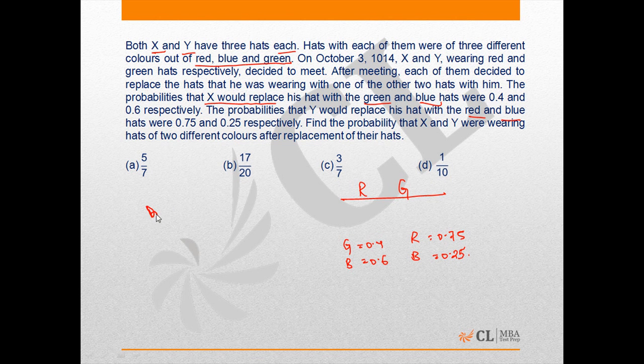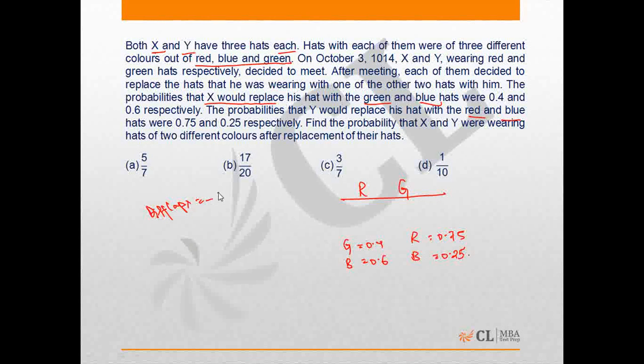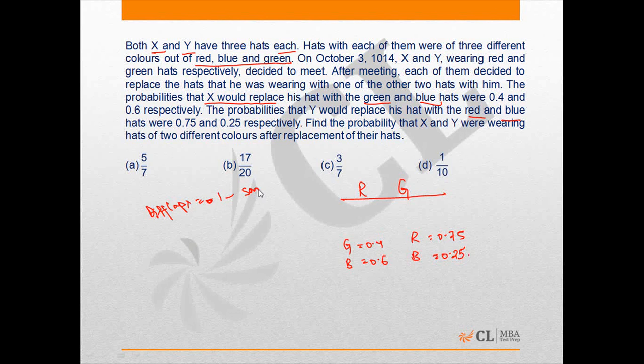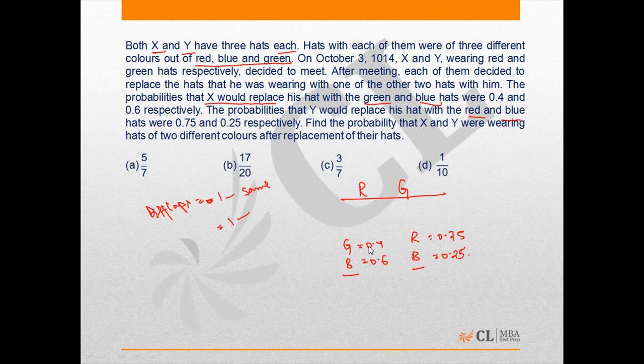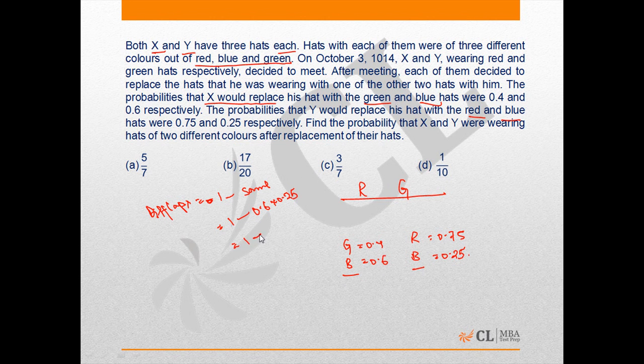Now the probability of different caps can be written as 1 minus probability of same caps. So if it is same it can only be blue and blue. So it is 1 minus 0.6 into 0.25. So it is 1 minus 6 by 40. So it is 34 by 40.